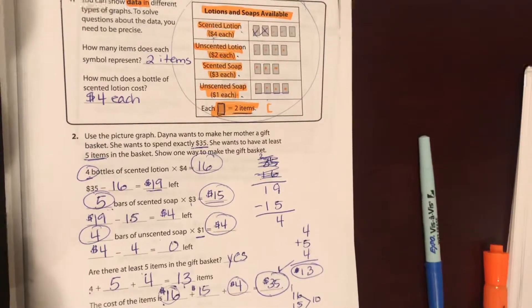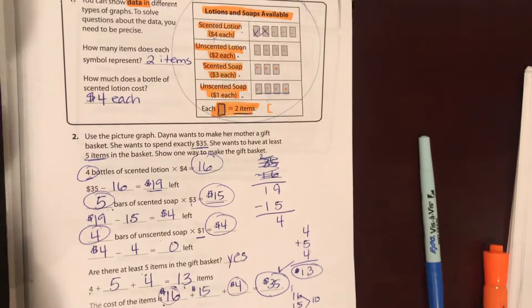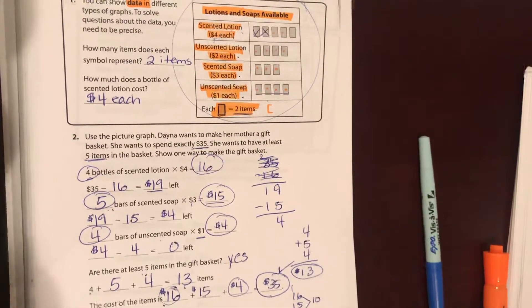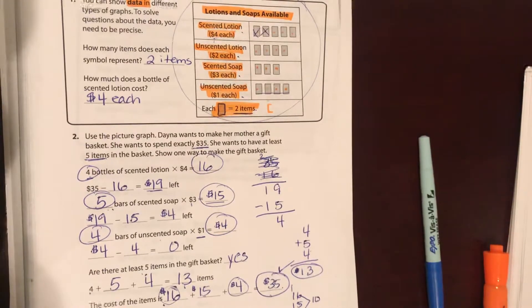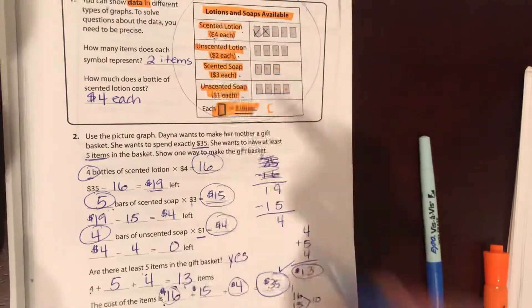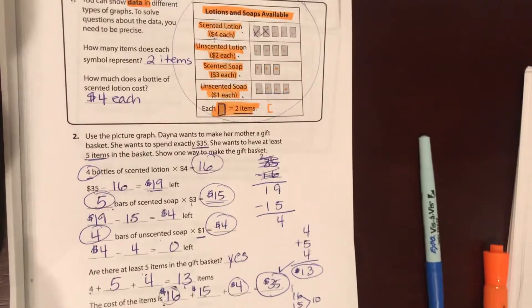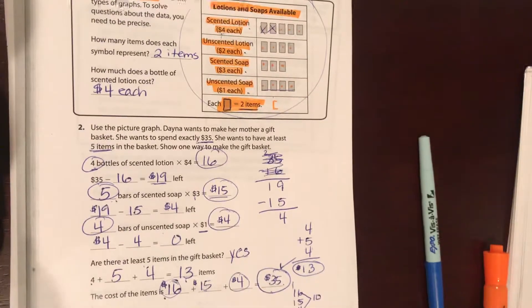If you buy, you know, three unscented lotions times two dollars each, that's six dollars. The first thing you have to do is do thirty-five minus six, that'll leave you with twenty-nine. And then when you do your next batch you have to subtract that from twenty-nine. Each time you have to keep subtracting what you spent from what you had left over and that should work. Okay, good job.